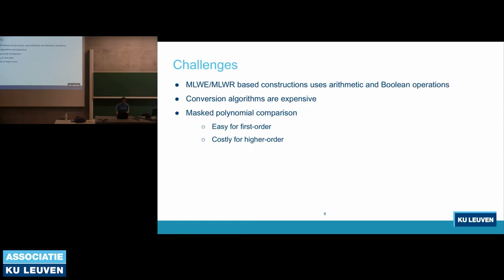The challenges are that MLWE or MLWR-based constructions use both arithmetic and Boolean operations. So they need some conversion algorithms, which are expensive. There is also a component — masked polynomial comparison — that is easy for first order but becomes expensive to support arbitrary order.